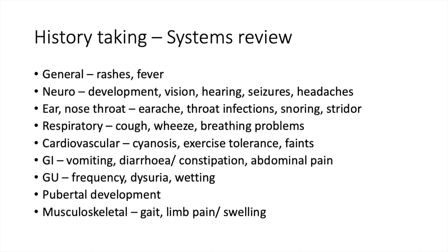Systems review: you can go through everything briefly, or focus on the relevant ones. Arranged from top to bottom — start with general, then neurological. Ask about development, vision, hearing problems, seizures or headaches. Then ear, nose and throat: earaches, throat infections, snoring or stridor.